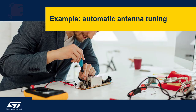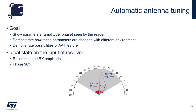Our next example shows the features of the automatic antenna tuning. The goal is to show the parameters — both amplitude and phase — as they are seen by the reader, and to demonstrate how these parameters change with a different environment, and to demonstrate the possibilities of the automatic antenna tuning feature. We must begin with the ideal state of the input of the receiver, making sure that we're at the recommended receiver amplitude.